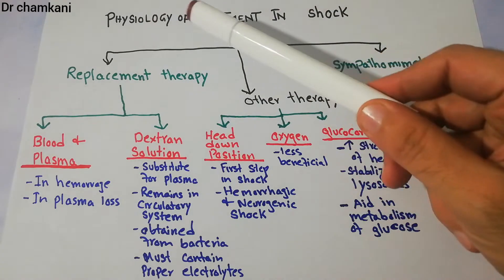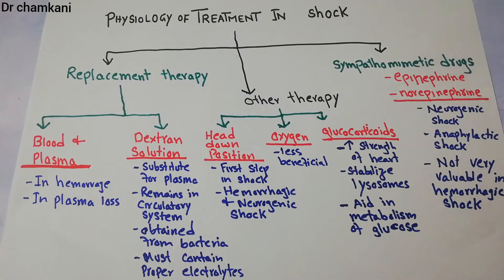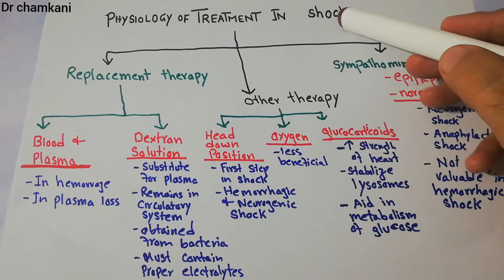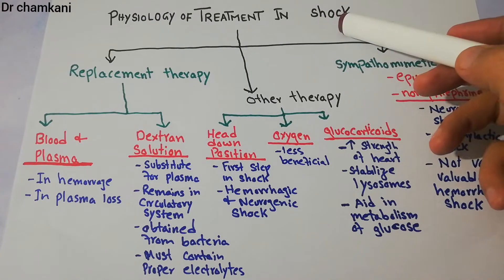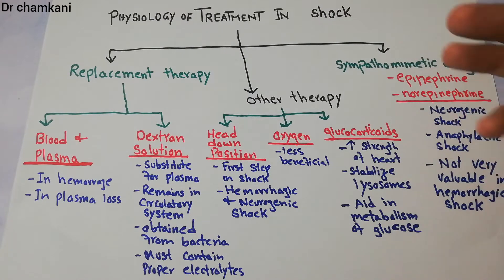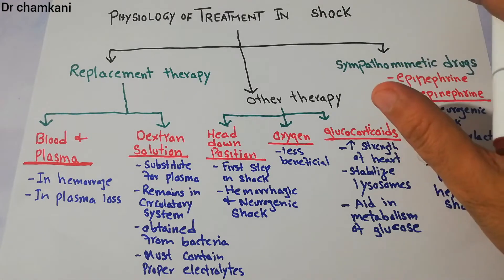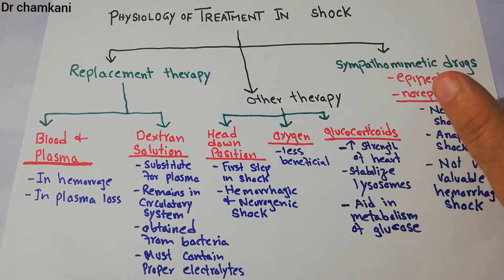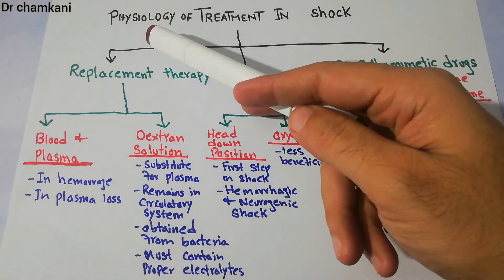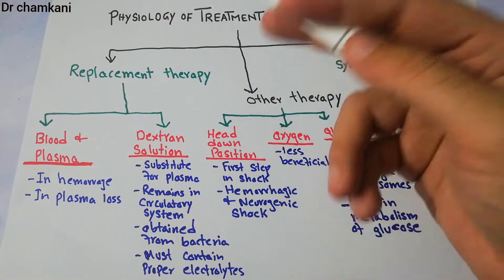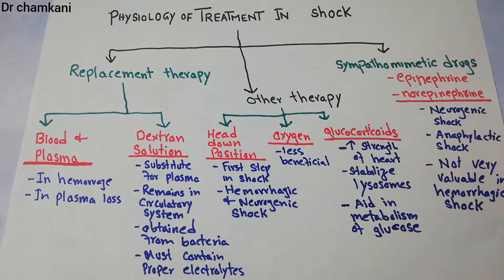In this lecture we are going to talk about the physiology of treatment in shock — the physiology behind the treatment options in different kinds of shock. So far we have discussed shock, the different stages of shock, different types of shock, and the different presentations of shock. Now in this lecture we will talk about the different treatment options broadly from a physiology point of view — how different treatment options will work in different types of shocks.